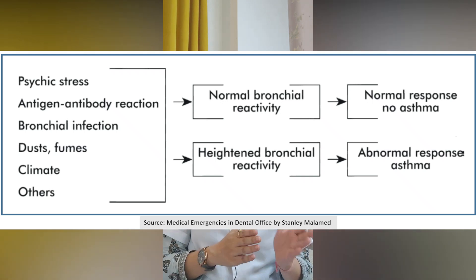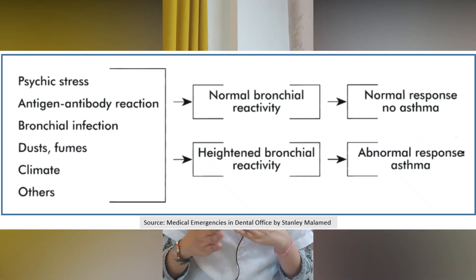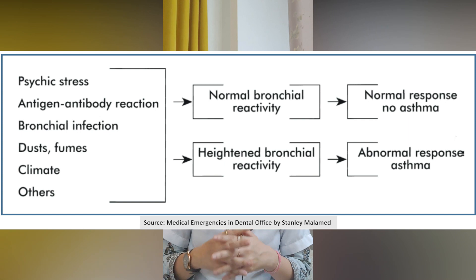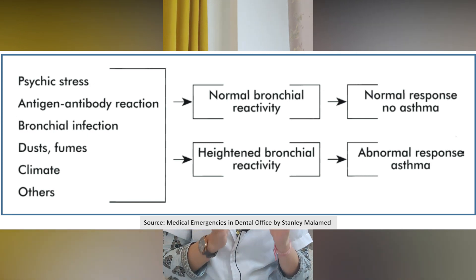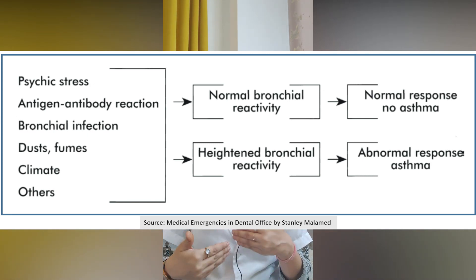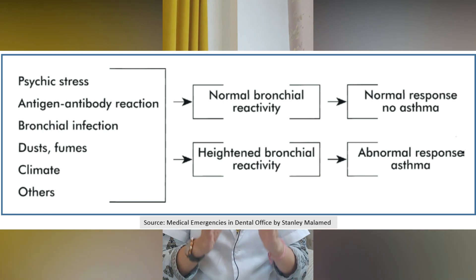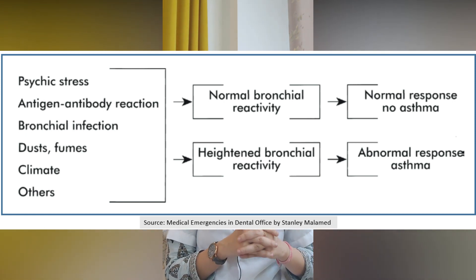For extrinsic asthma, the most important predisposing factor is a history of atopy — a type 1 hypersensitivity reaction with a genetic predisposition. Airborne allergens like plant pollens and fungal spores can trigger it, as can certain foods like cow's milk and chocolates, and drugs like aspirin and penicillin.